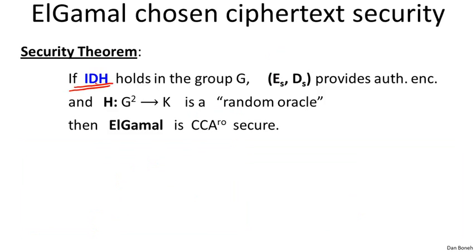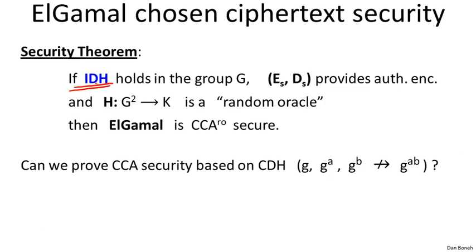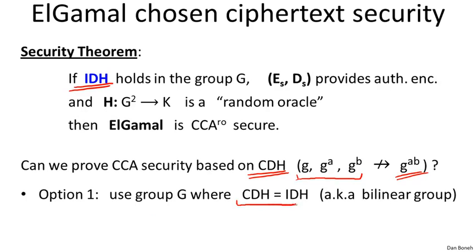I'll just say that this theorem raises two very natural questions. The first question is: can we prove CCA security of Elgamal just based on the standard computational Diffie-Hellman assumption — namely that given G to the A and G to the B, you can't compute G to the AB? It turns out there are two ways to do it. The first option is to use a group where CDH is hard but is provably equivalent to the interactive Diffie-Hellman assumption. These groups are called bilinear groups, and in such groups the Elgamal system is chosen ciphertext secure based on CDH, at least in the random oracle model. These bilinear groups are actually constructed from very special elliptic curves.